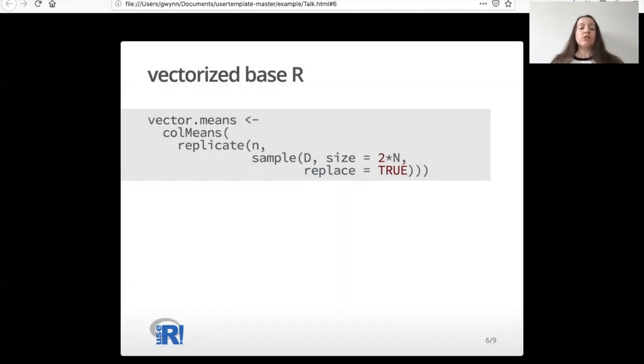Here's the vectorized code in base R, and base R is read from the inside out. The first thing that I do is sample. Then I replicate the sampling n times, and then I take the column means of those replicates. Replicate is a really good function to use when you're vectorizing code in base R.